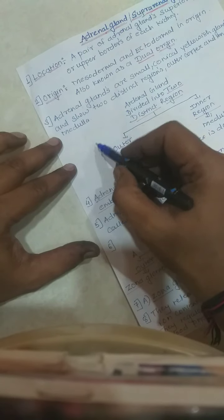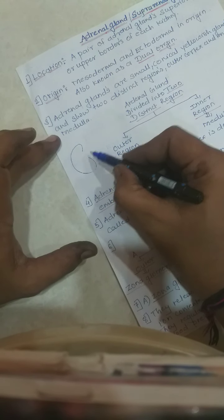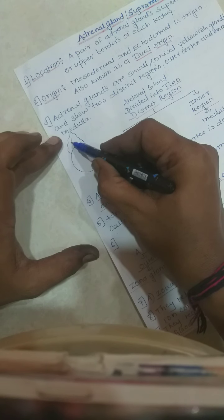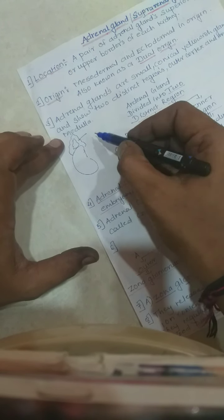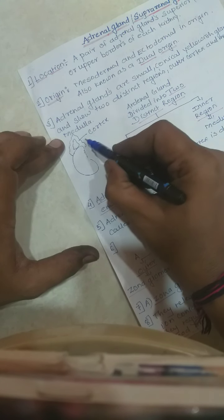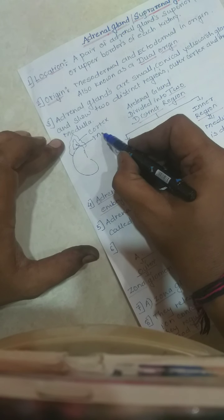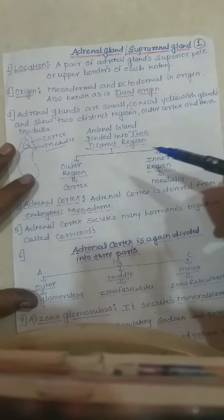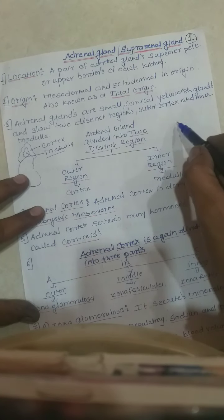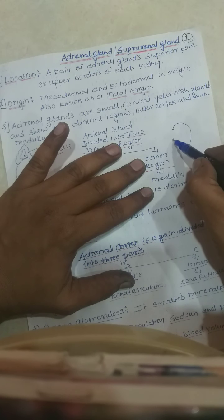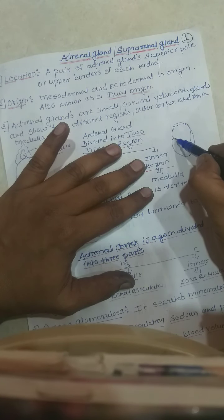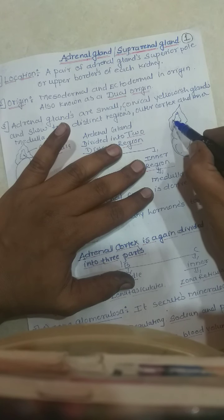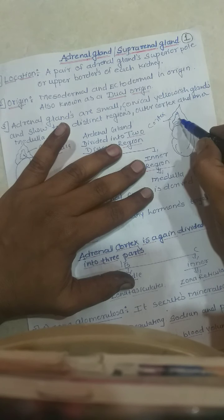I will show you a diagram of one kidney. The adrenal gland is present on the superior pole of the kidney. This gland has been divided into two main regions: the outer region is called the cortex region and the inner part is called the medulla. This gland is also called the suprarenal gland.